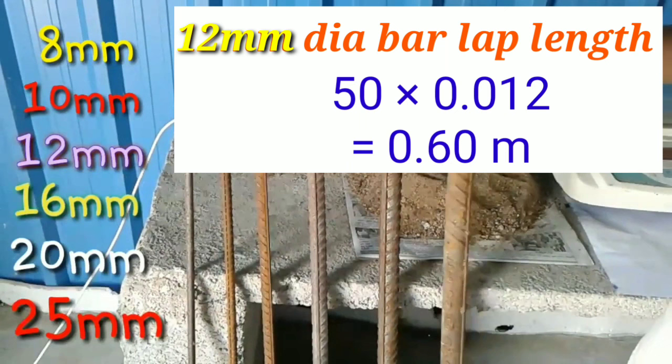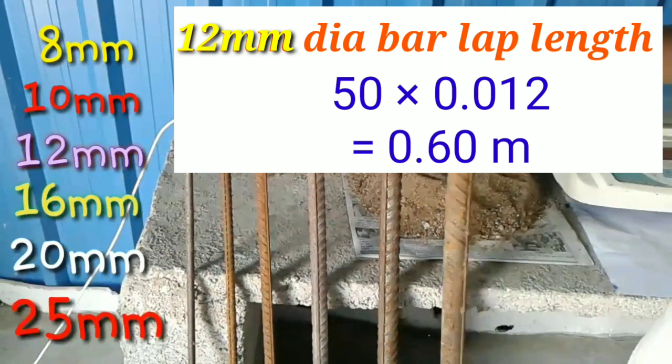For 12mm dia bar: 50 × 0.012 = 0.6 meter. For 16mm dia bar, lap length: 50 × 0.016 = 0.8 meter.